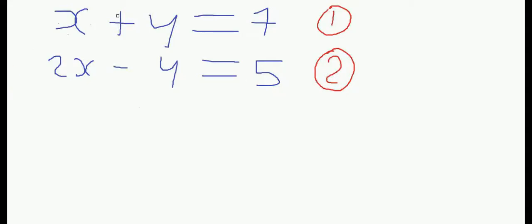Today I am going to do part 2 of simultaneous equations. Here I have a pair of linear equations. For equation 1, X plus Y equals 7. And equation 2, 2X minus Y equals 5.